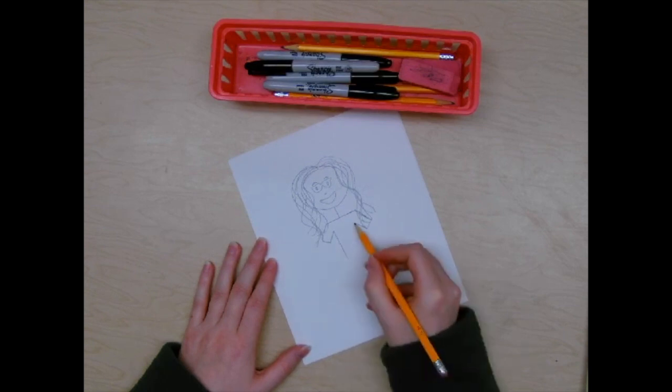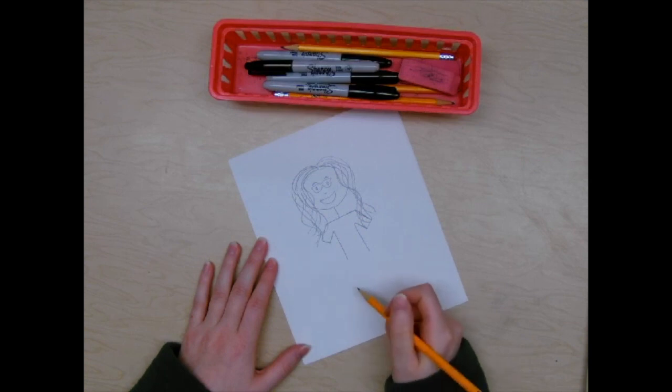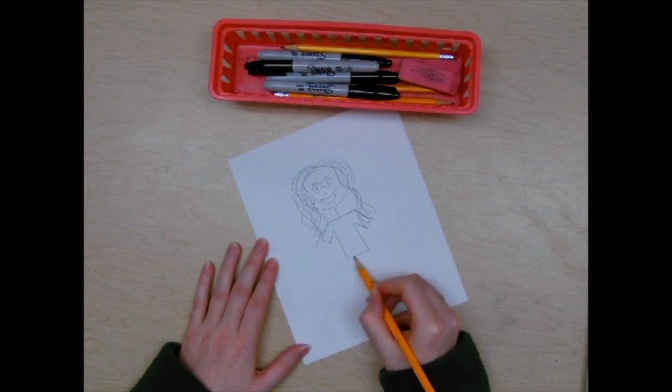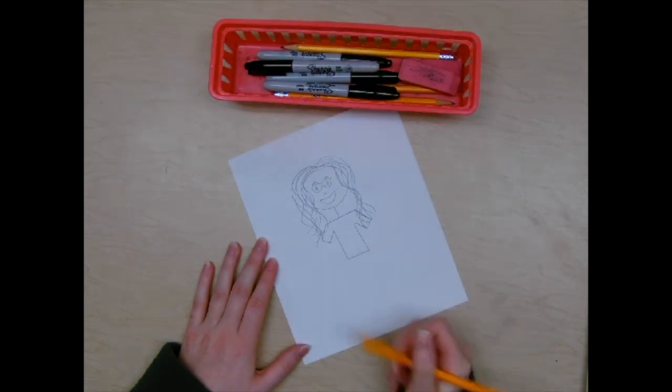We're going to draw two lines that go down. You can make your shirt however long you want. You could even turn it into a dress if you wanted. But if it's a shirt, you're going to draw a line at the bottom connecting it.